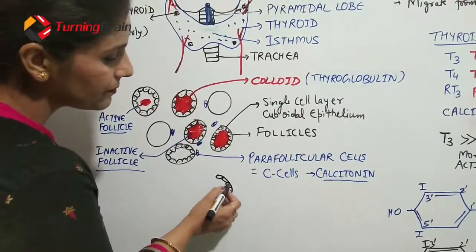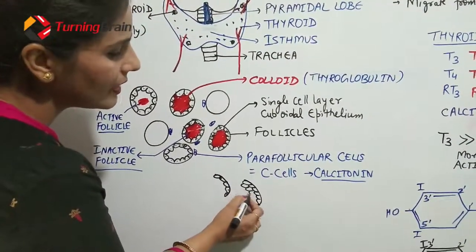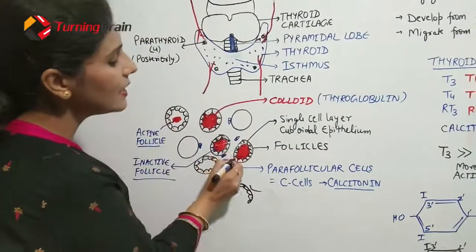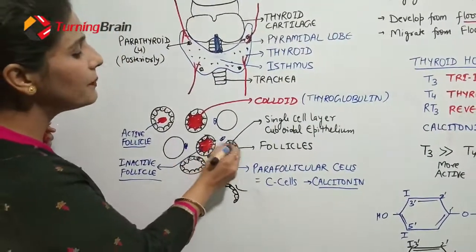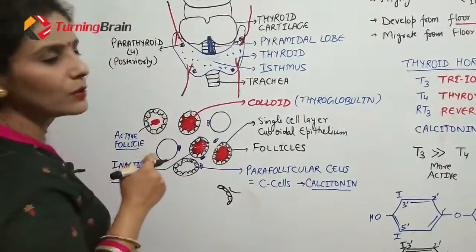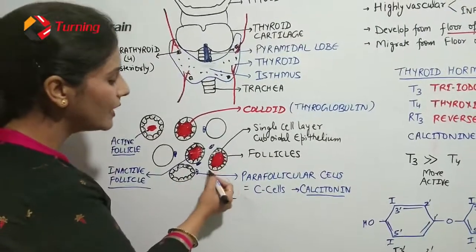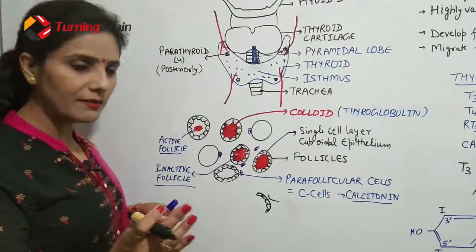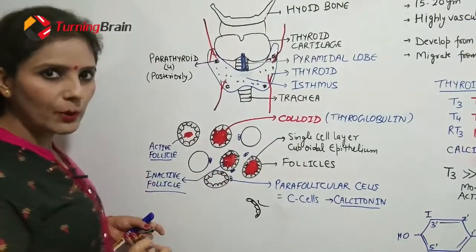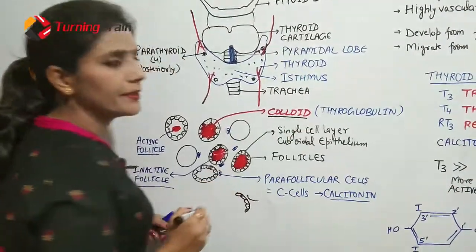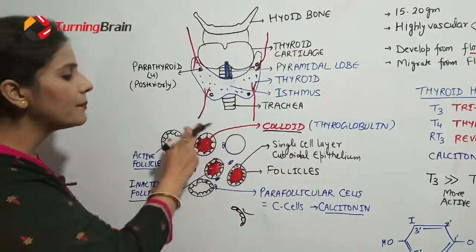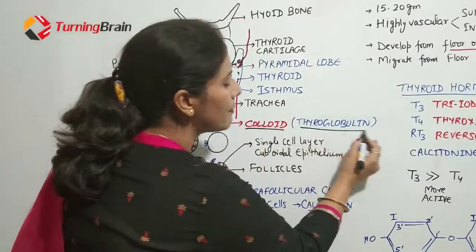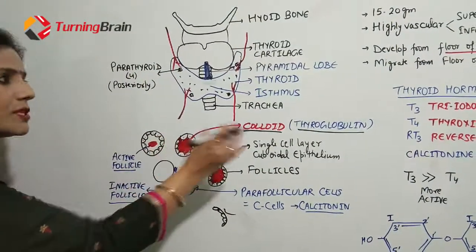Inside this follicle there is a pink proteinaceous material called colloid. The colloid is actually pink in color. So inside the follicle, a pink proteinaceous material is filled, which is known as colloid. In this colloid, a substance called thyroglobulin is stored, and the thyroid hormone is formed from this thyroglobulin.